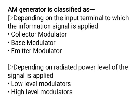Depending on the power level of the signal applied, there are two types of modulators: low level modulators and high level modulators. Low level modulators generate AM with small signals and must be amplified before transmission. High level modulators generate AM with high power levels, usually in the final stage of the transmitters.